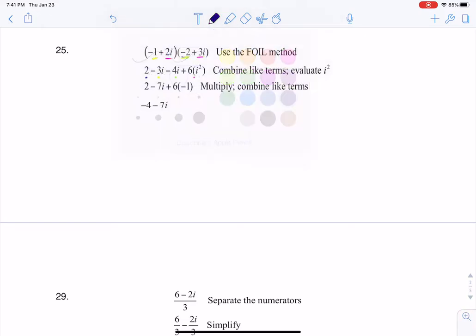But keep in mind, one of the big things coming out of this section is that any time you square i, i squared is equal to negative 1. So that's why you see me substituting negative 1 in here.